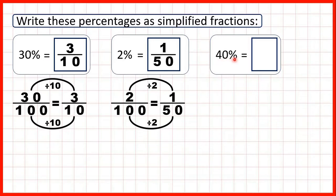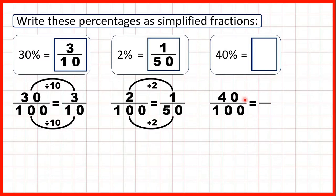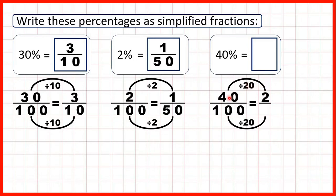Finally we have 40 percent, so that's 40 over 100. Now there are lots of common factors: 40 and 100 are both multiples of 2, 4, 5, and 10. But the highest common factor of 40 and 100 is 20 — it's the highest times table that has both 40 and 100 as multiples. So let's divide by 20: 40 divided by 20 is 2 because 2 times 20 is 40, and 100 divided by 20 is 5 because 5 times 20 is 100. So as a fraction in its lowest terms, 40 percent is equal to 2 fifths.